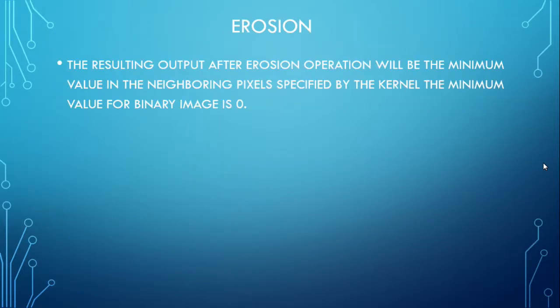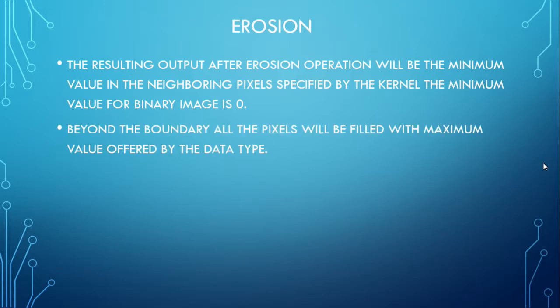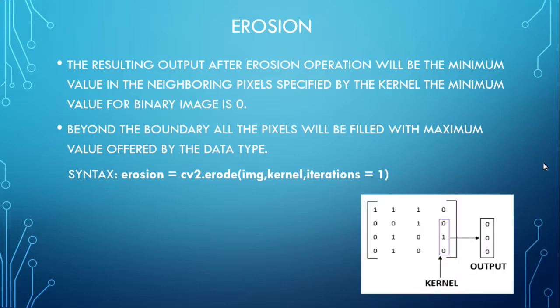Erosion: The resulting output after erosion operation will be the minimum value in the neighboring pixels specified by the kernel. The minimum value for binary image is 0. Beyond the boundary, all the pixels will be filled with maximum value offered by the data type. The syntax for erosion is: erosion = cv2.erode(img, kernel, iterations=1), where img is the image taken from the user. As we can see in the picture, there are majority of zeros in the area represented by kernel. Hence, the resulting output will be all zeros.